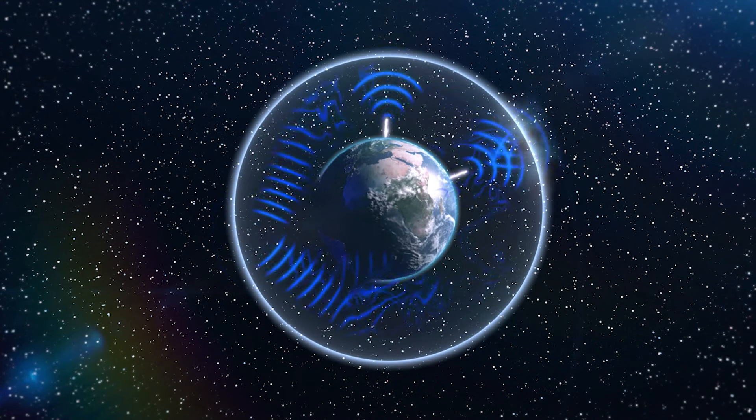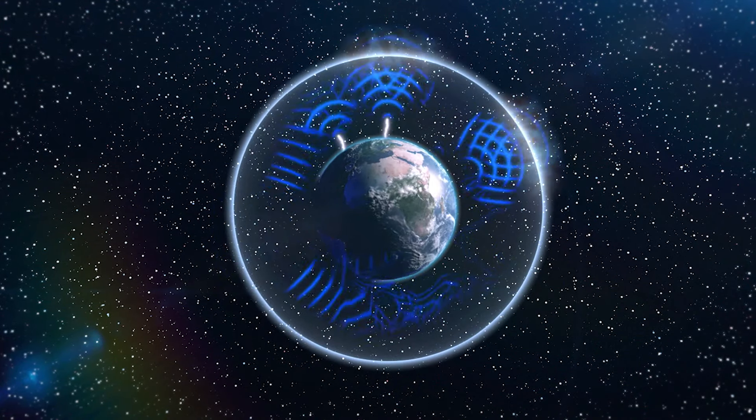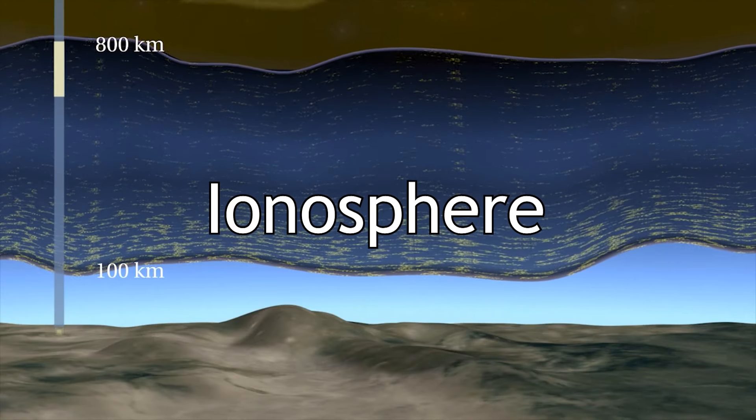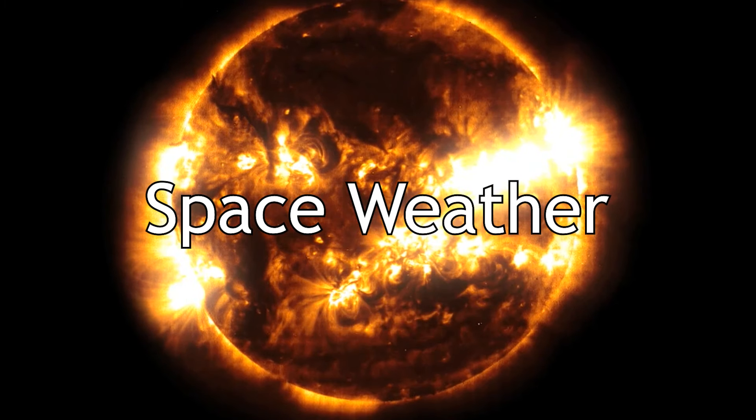The Schumann Resonances are a sequence of electromagnetic energy fields that exist ubiquitously on our planet. The energy of the Schumann Resonances comes from lightning strikes, the ionosphere, and high energy particles from space, in particular our sun.